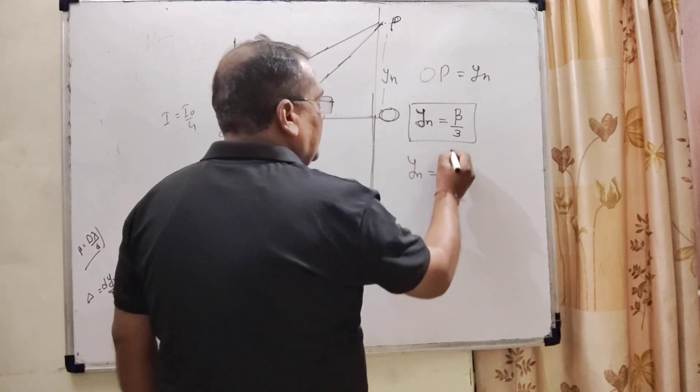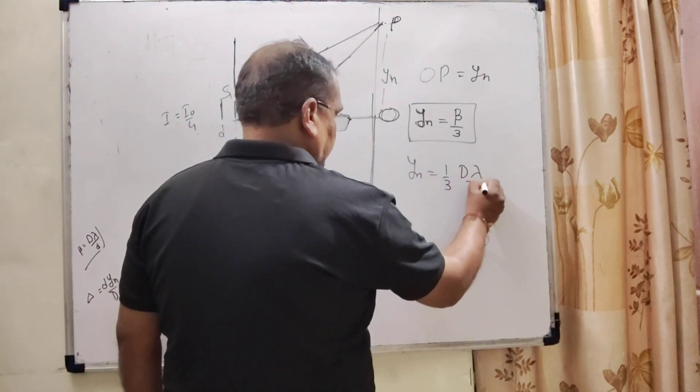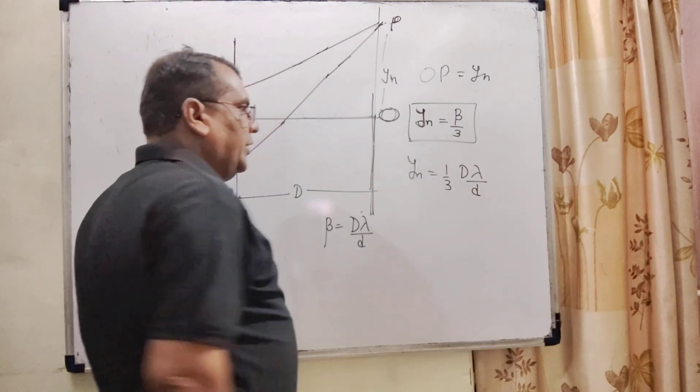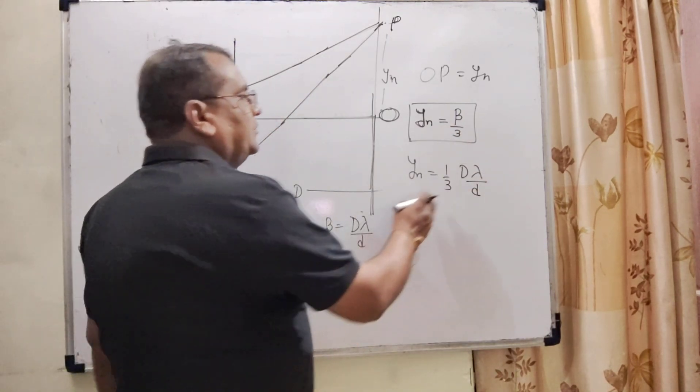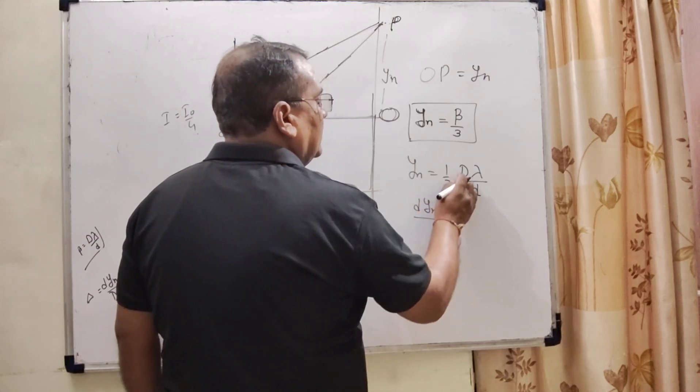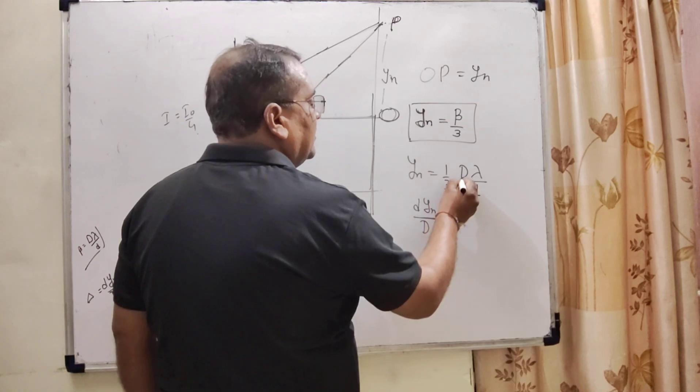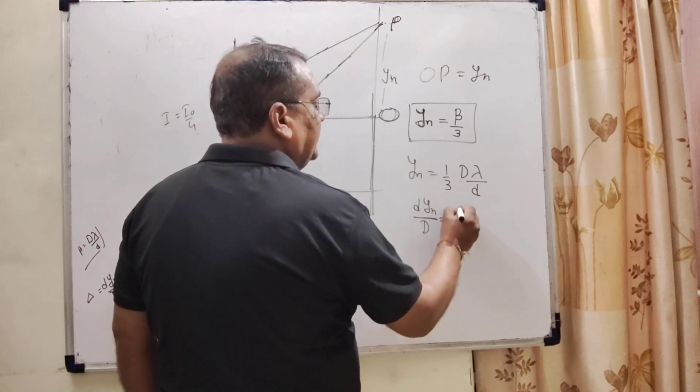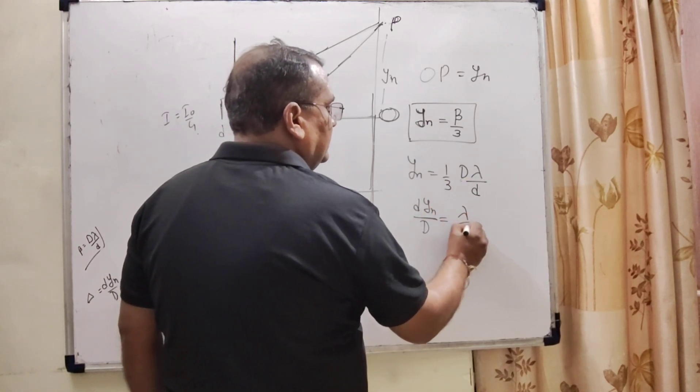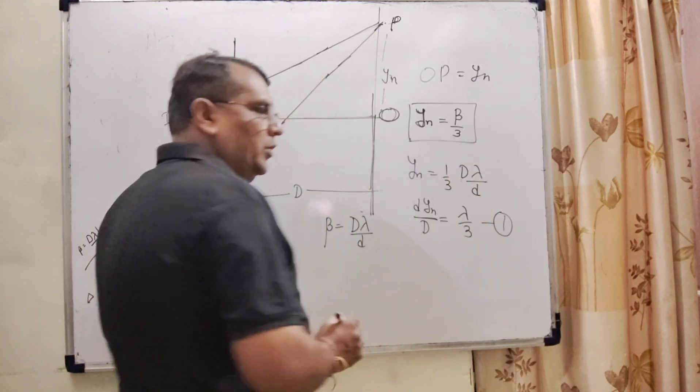Now, substitute this value in the place of beta. Now, transposing this small d and capital D to the left side comes in denominator, and we get yn equals lambda by 3. That is the first equation.